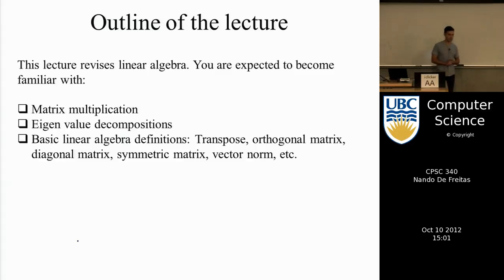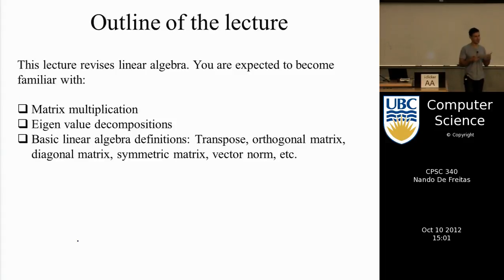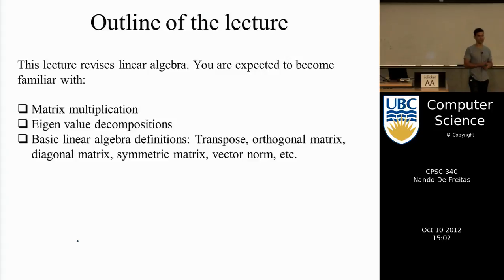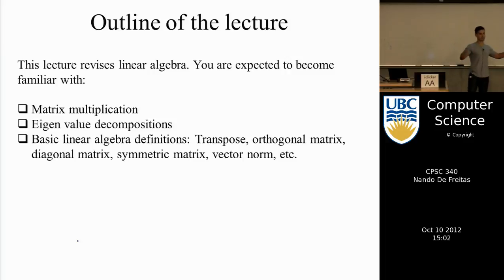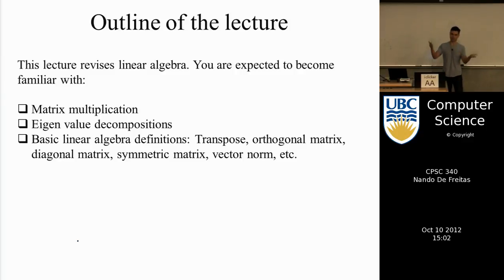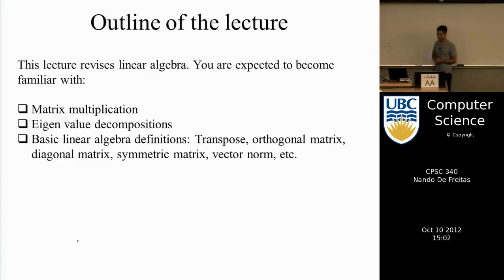This marks a transition in the course. Up to now, we've only been doing discrete variables, binary in particular. To manage continuous variables and do probability with them, we need to manipulate matrices, because we're going to deal with many variables, and matrices are good data structures to handle many variables. They're easy to code and easy to understand. Because of that, we need to revise linear algebra.